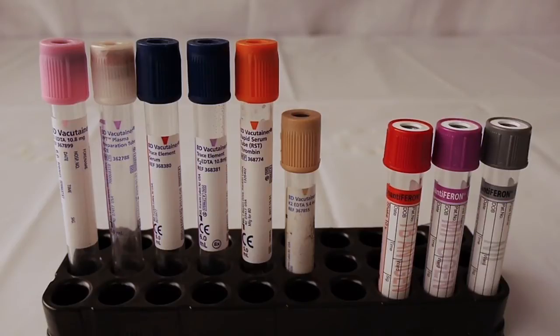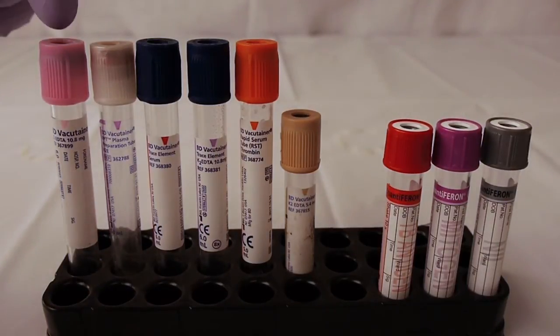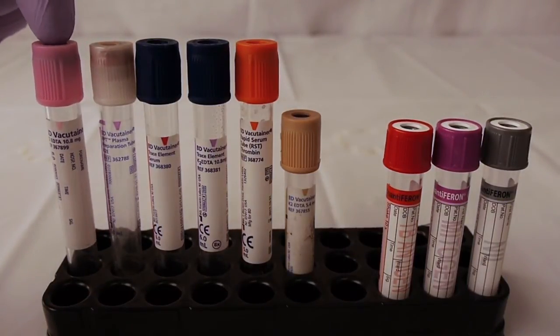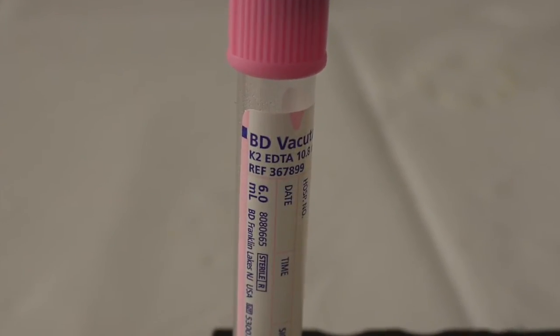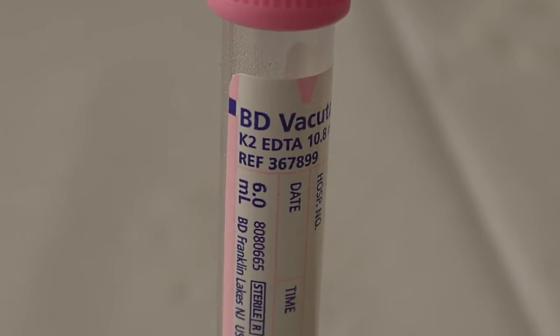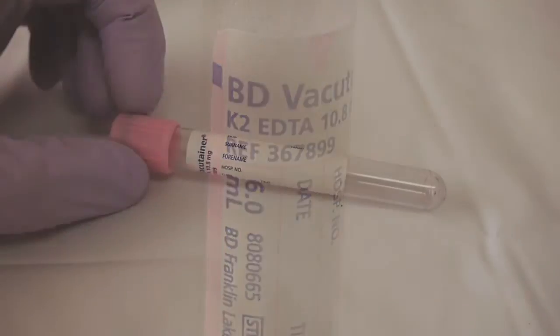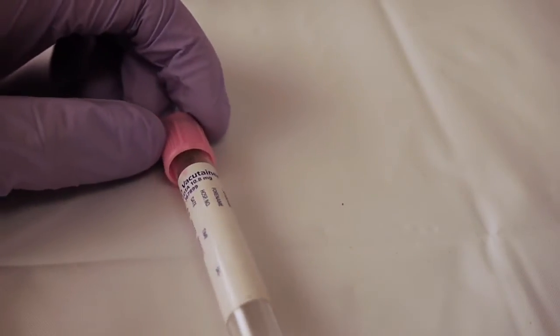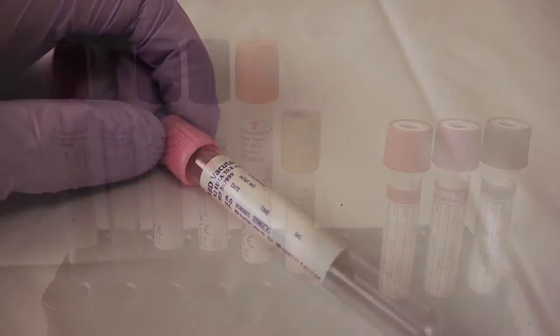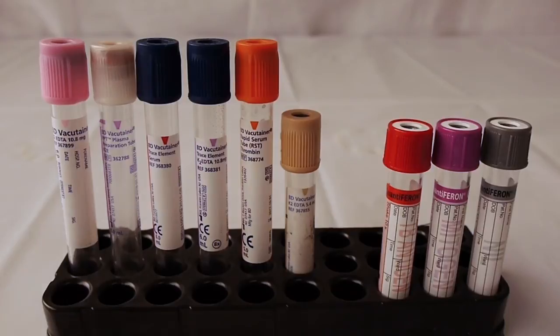Let's start on the far left. We have the pink top tube. The pink top tube is considered a blood banking tube, blood banking or immunohematology. This tube has EDTA, but it has a label that's designed to meet blood banking standards.